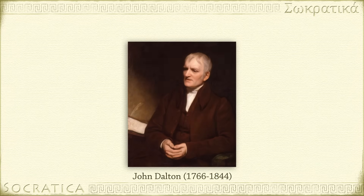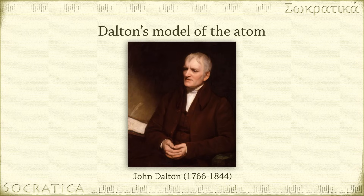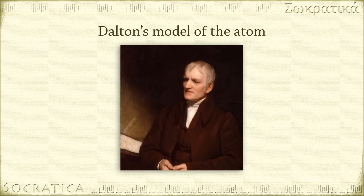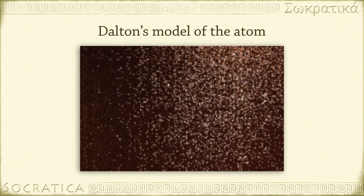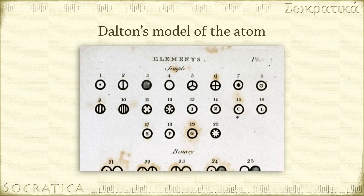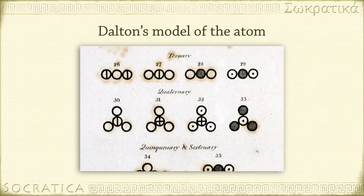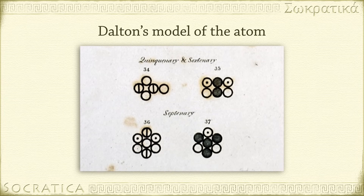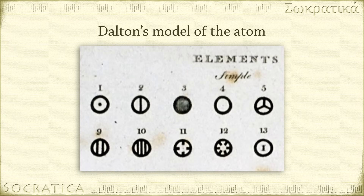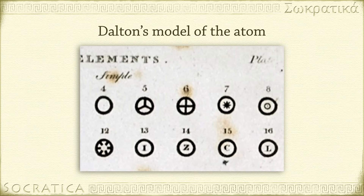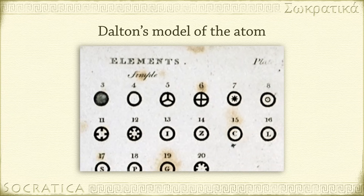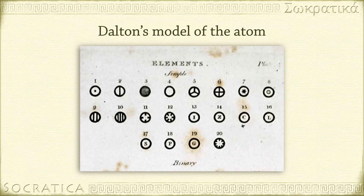We might say the atomic age started with the work of John Dalton. Dalton proposed the atomic theory in 1803. This picture of the world, where everything is composed of atoms, helped explain what had been observed in chemical reactions. For instance, different elements always combined to form chemical compounds in amounts that were simple whole-number ratios. Dalton proposed that each element had its own unique type of atom with a certain characteristic weight. These atoms were very small, solid particles that were indivisible. That was the model of the atom for almost a hundred years.